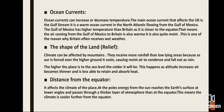The shape of the land, also known as relief, can also affect climate. Mountains receive more rainfall than low-lying areas because as air is forced over higher ground it cools, causing moist air to condense and fall as rainfall. The higher the place is above sea level, the colder it will be, as altitude increases air becomes thinner and is less able to retain and absorb heat.